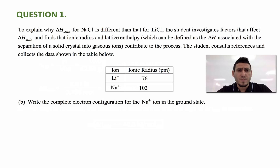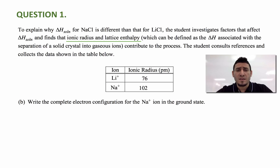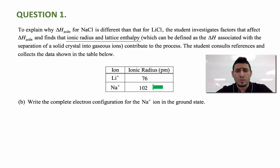Now let's move on to the next part. To explain why delta H solution for NaCl is different than that for LiCl, the student investigates factors that affect delta H solution and finds that ionic radius and lattice enthalpy — defined as the delta H associated with the separation of a solid crystal into gas ions — contribute to the process. The student collects data in a table showing ionic radii: lithium ion is 76 picometers and sodium ion is 102 picometers. The question asks: write the complete electron configuration for the sodium ion in the ground state.